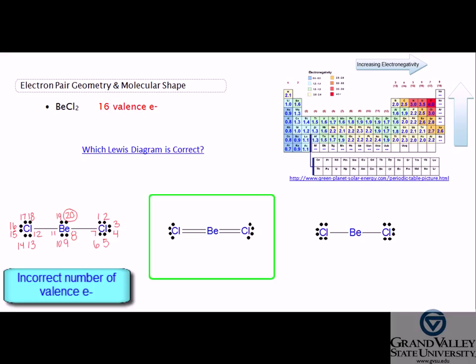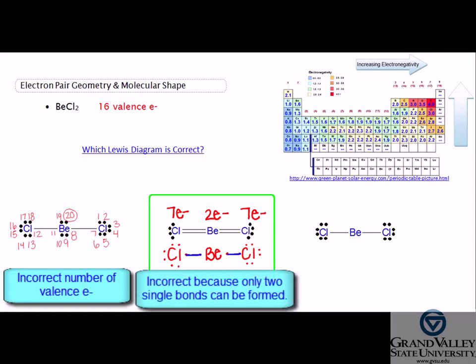The next option shows double bonds between beryllium and chlorine. By referring back to the periodic table of elements, beryllium has only two valence electrons. Having only two valence electrons, only two single bonds can be formed. Therefore, this diagram is incorrect.